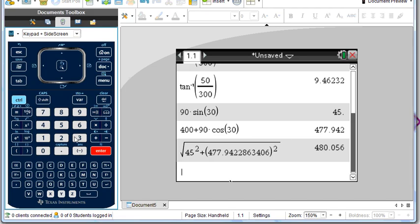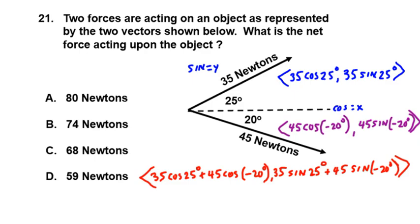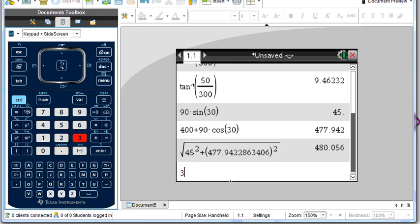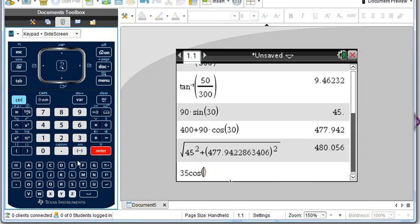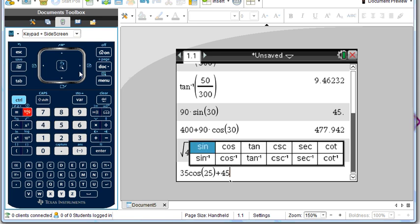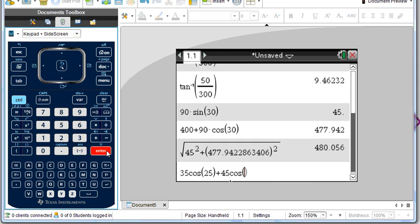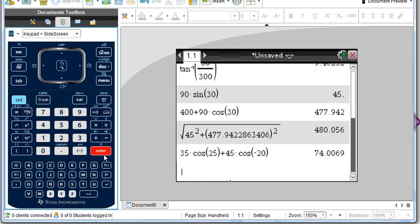So we go to our calculator, and we'll put in 35 cosine 25 degrees plus 45 cosine of negative 20 degrees. And that's going to be our x component.